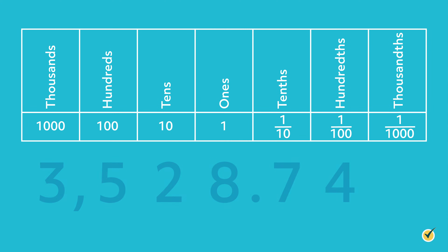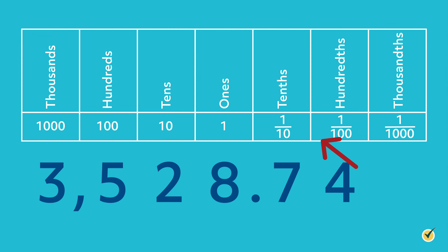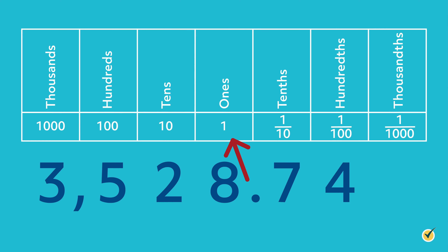Take a look at this place value chart. With this example of 3528.74, we can see that each movement to the right of the decimal point drops us down by a factor of 10. We move from tenths to hundredths to thousandths. On the other hand, as we move to the left of the decimal point, we increase by a factor of 10 each time. We move from tens to hundreds to thousands.